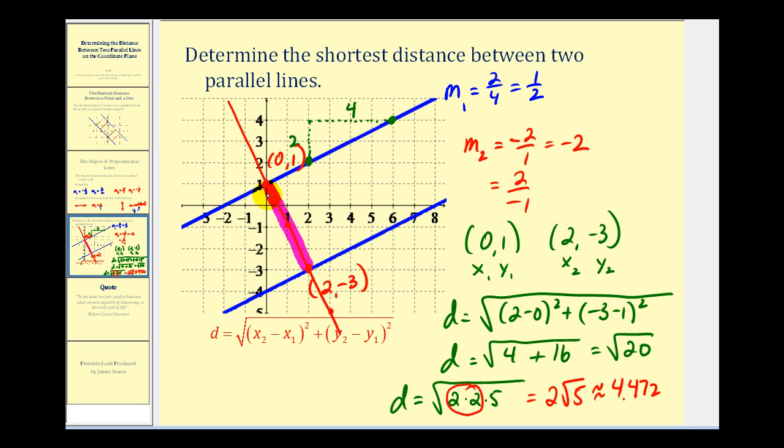Now, I do want to mention this point of intersection right here was very convenient because the coordinates were integers. If it wasn't that easy to determine, we'd have to find the equation of this red line, and then determine the equation of this blue line here, and then solve it as a system of equations to determine this point of intersection.